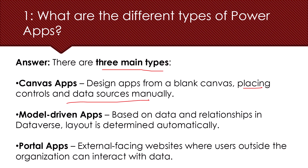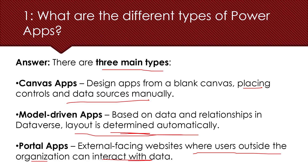The second type is Model-Driven Apps — it is based on data and relationships in Dataverse. You cannot use other data sources in Model-Driven Apps and the layout is determined automatically, so you cannot change the control spacing or placement. The third type is Portal Apps or Power Pages, which is an external-facing website where users outside of your organization can interact with your data.